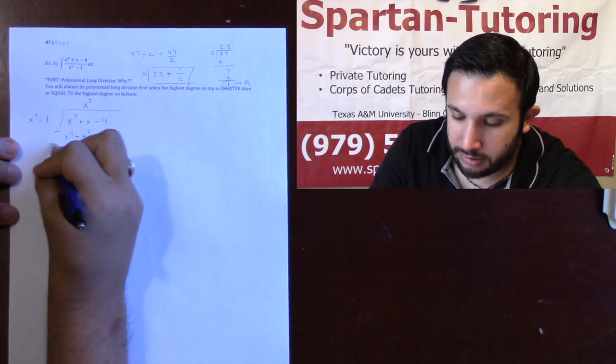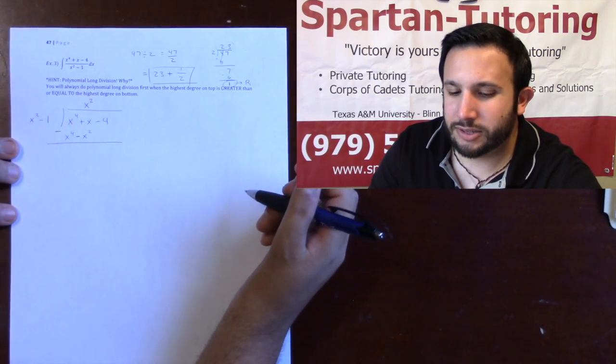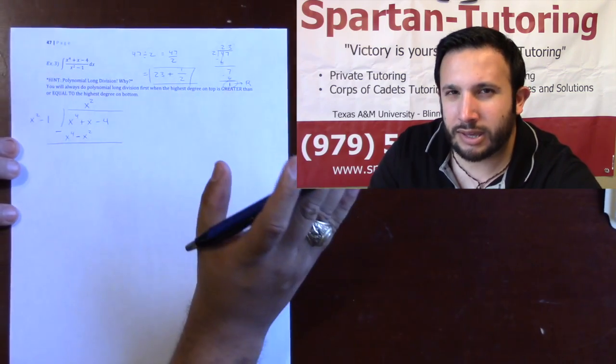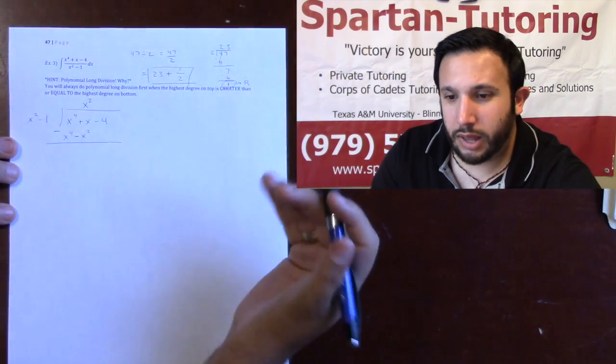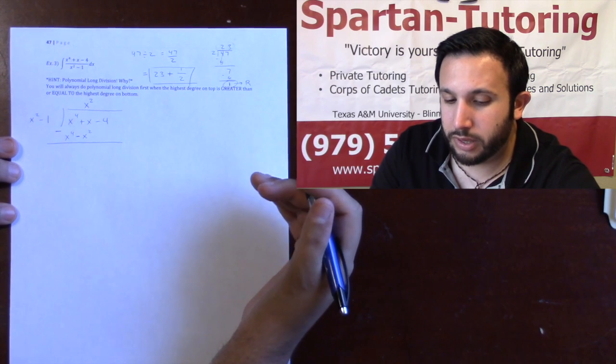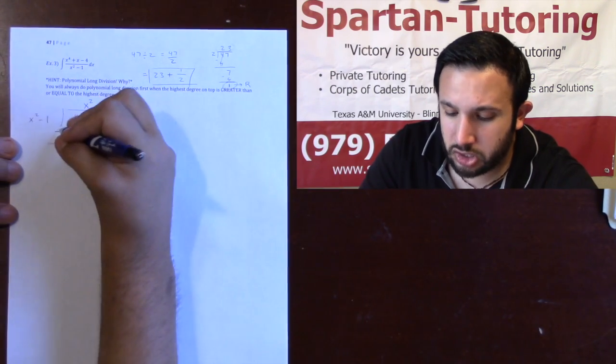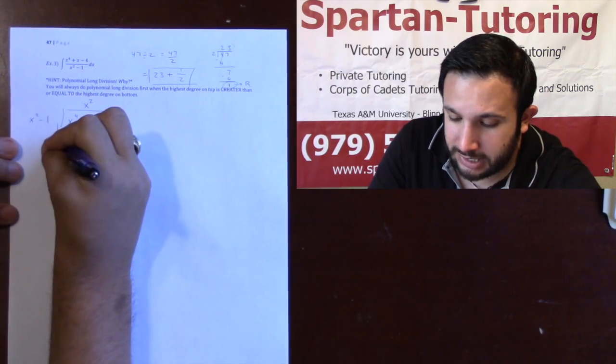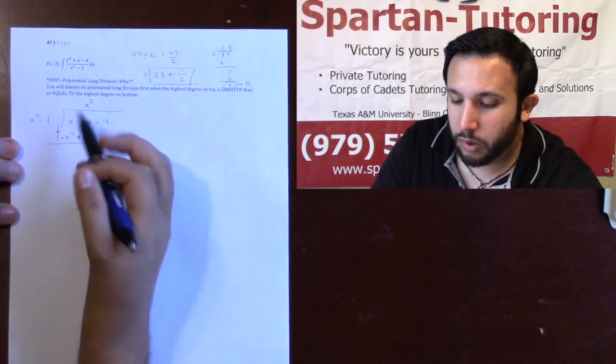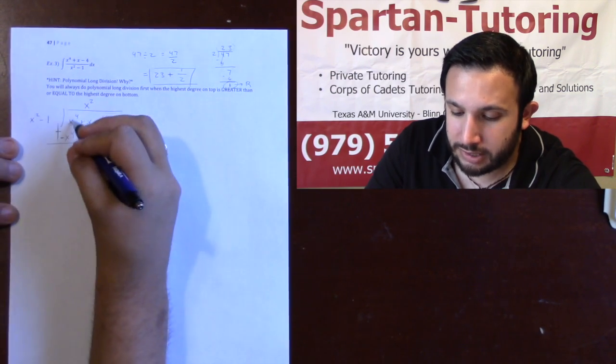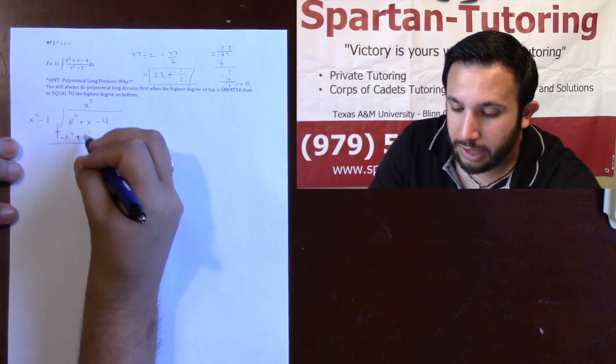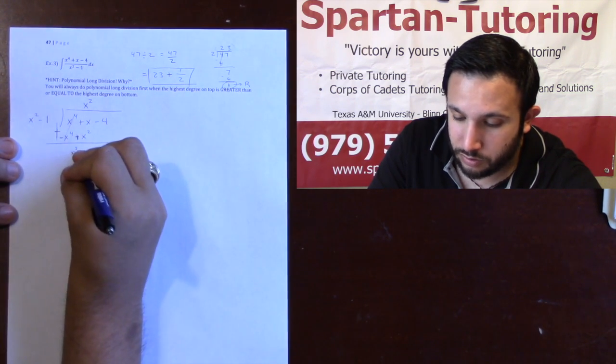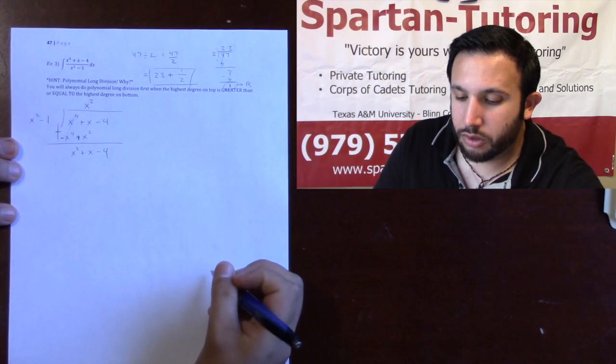And then we're going to subtract these. Now, when dealing with polynomials, I actually don't like subtracting, because if you have a negative minus a negative, it can get kind of confusing. So, instead, what I like to do, you don't have to do this, but the way that I like to do it is I change that minus into a plus. However, when you change that into a plus, make sure you change the sign to every term here. That way, when I see x to the 4th minus x to the 4th, that's going to cancel. And when I do x minus 4 plus x squared, that's just, well, x squared plus x minus 4. Cool.